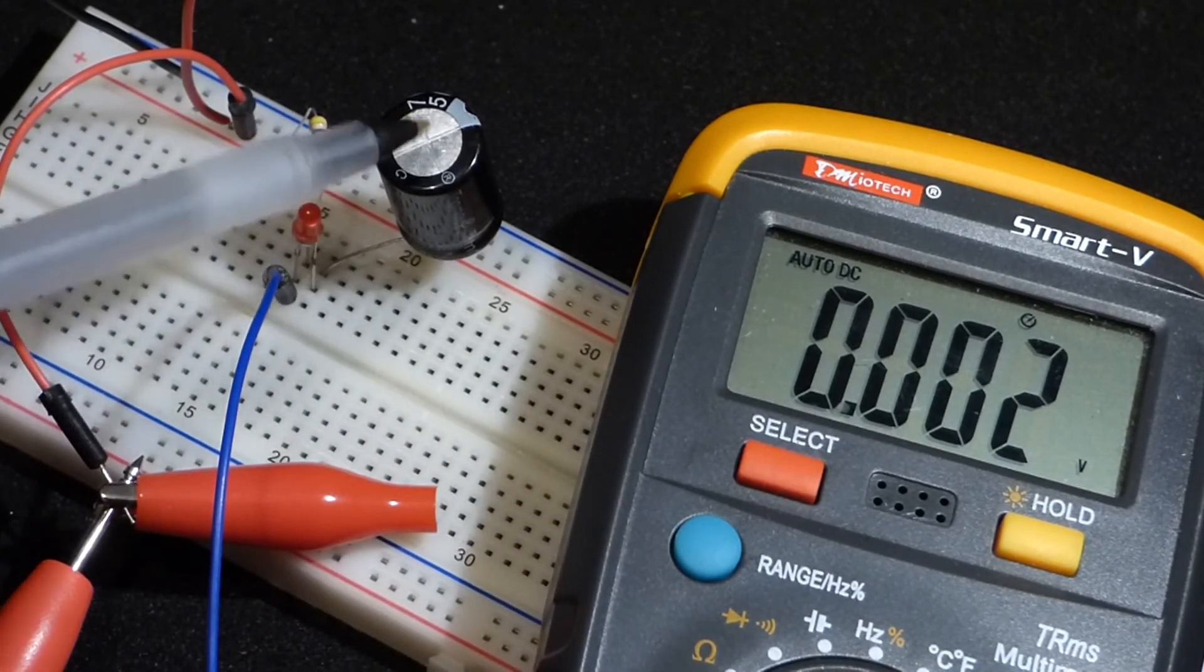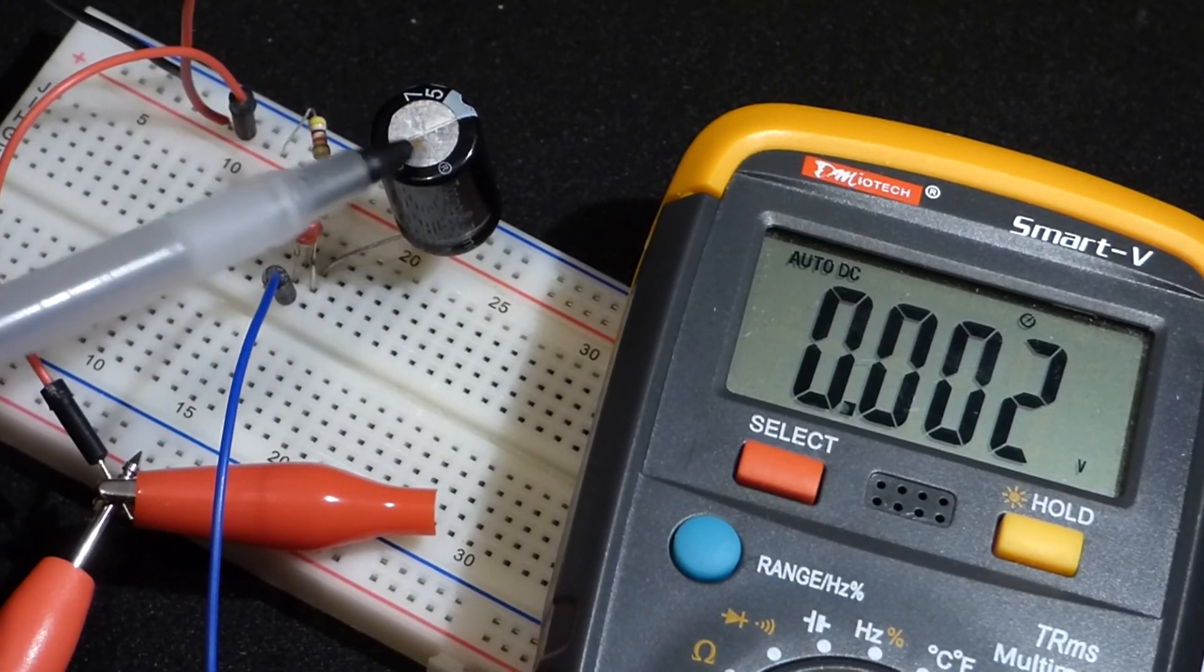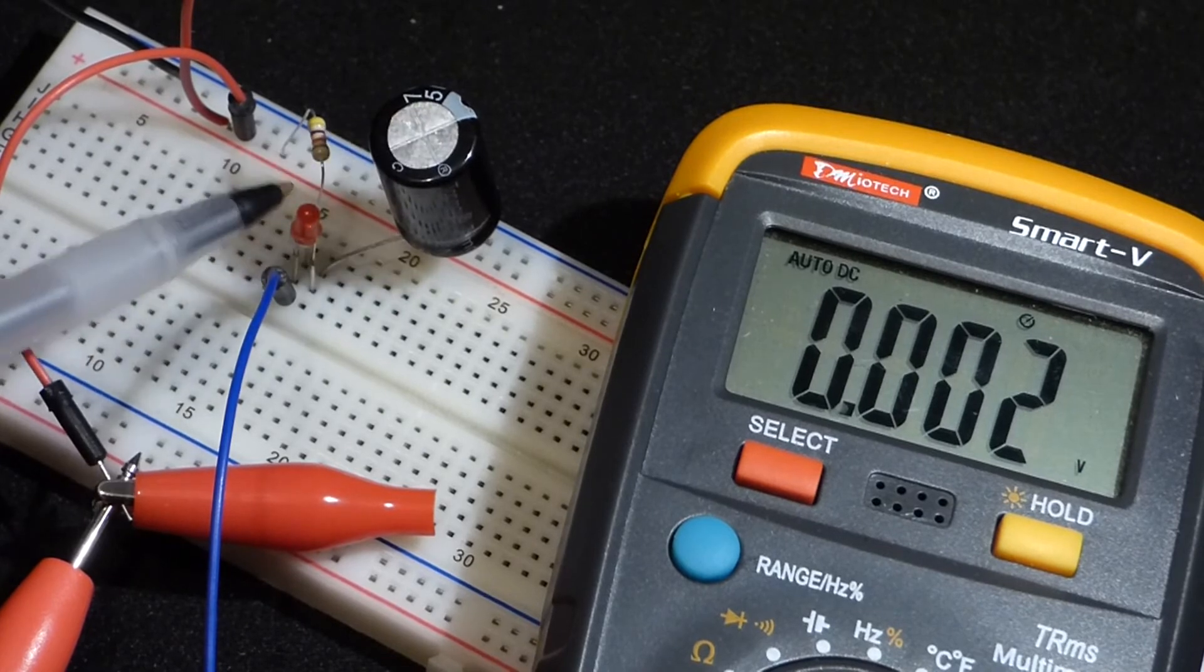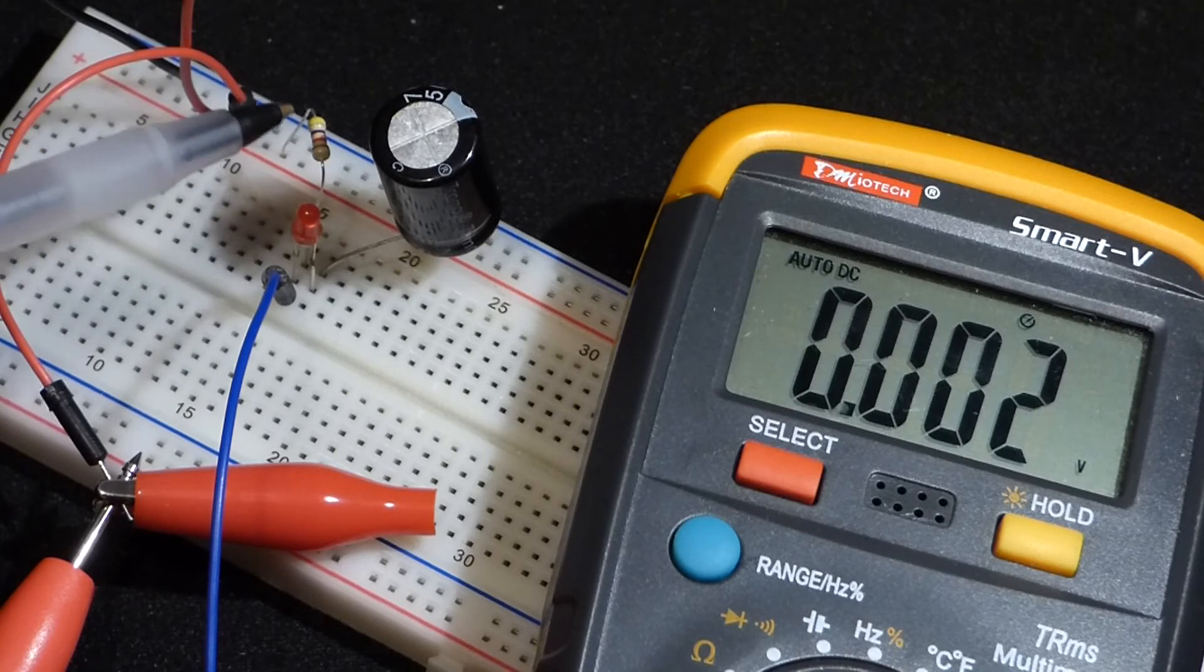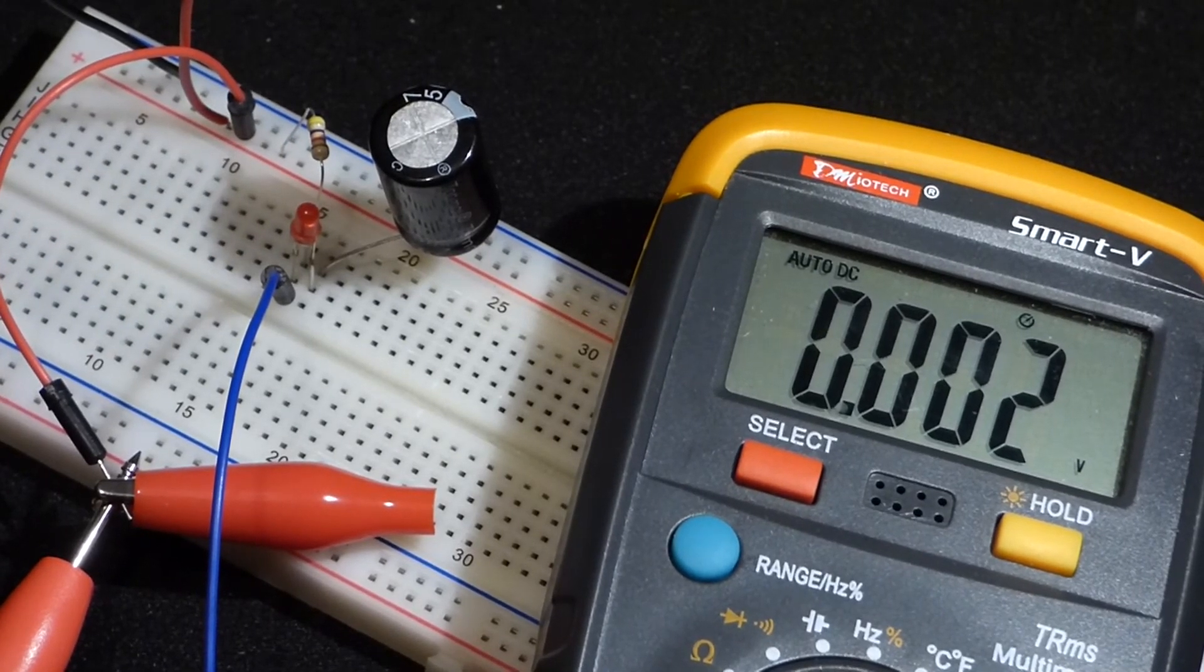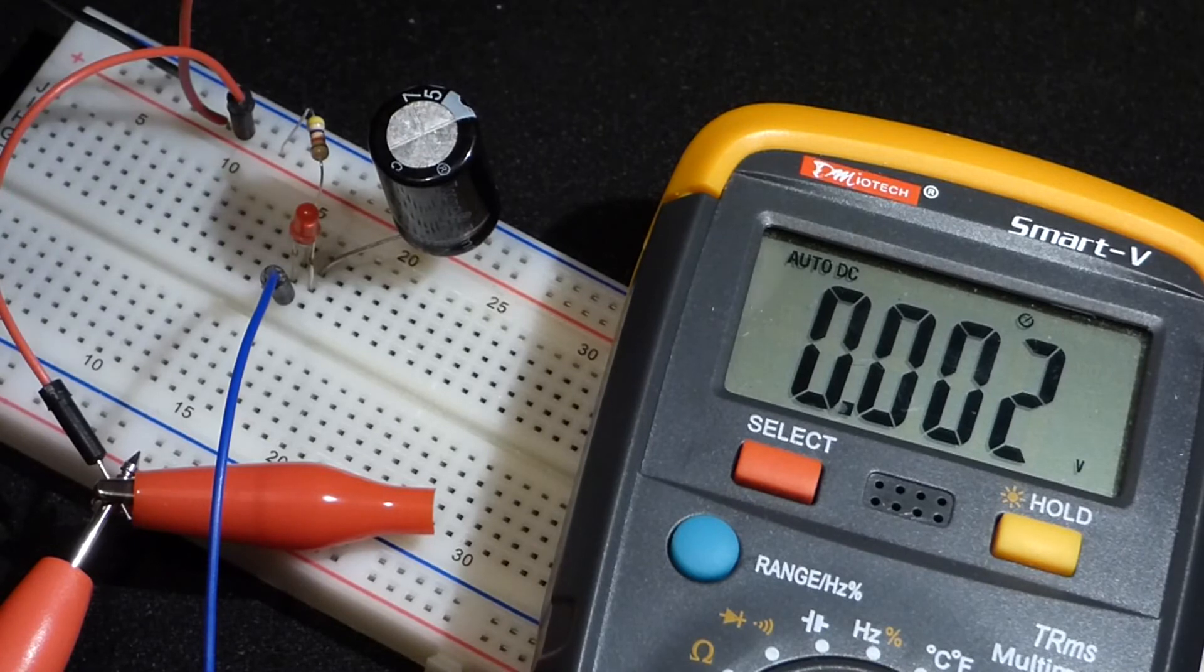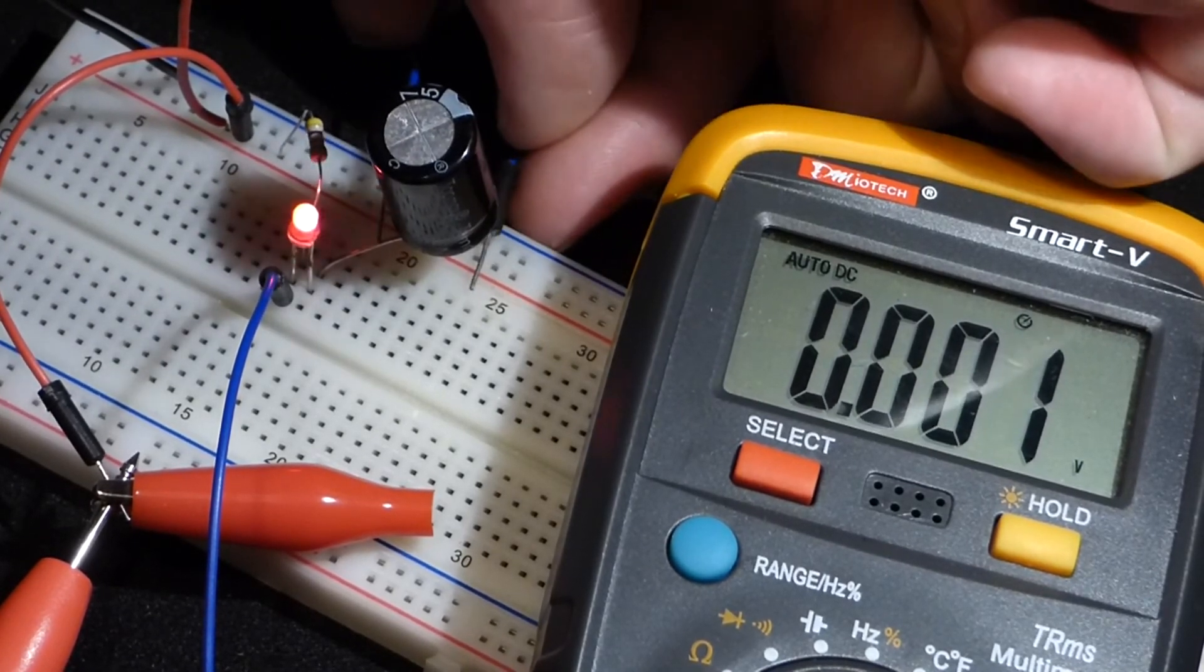The capacitor is charged, so when you consider the capacitor plus the voltage drop of the LED, there's no current flow. So there's no reason for there to be a voltage across the resistor. Now we'll look at what happens when we short out the capacitor.